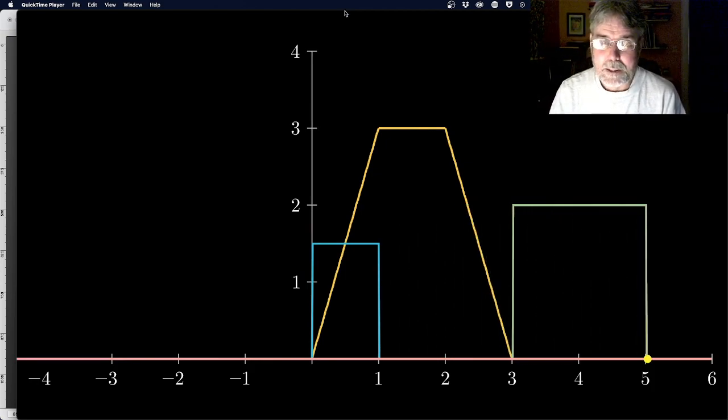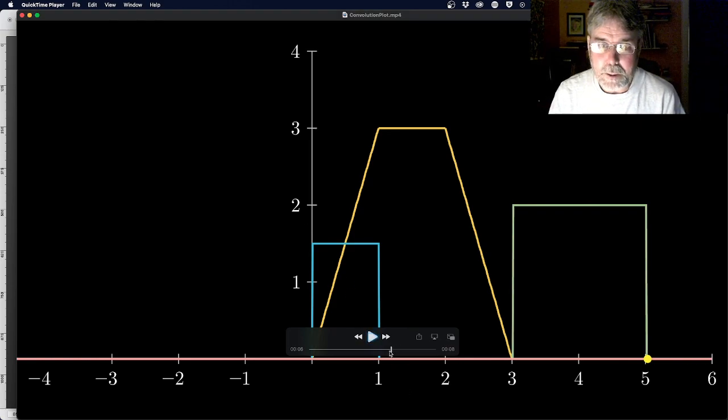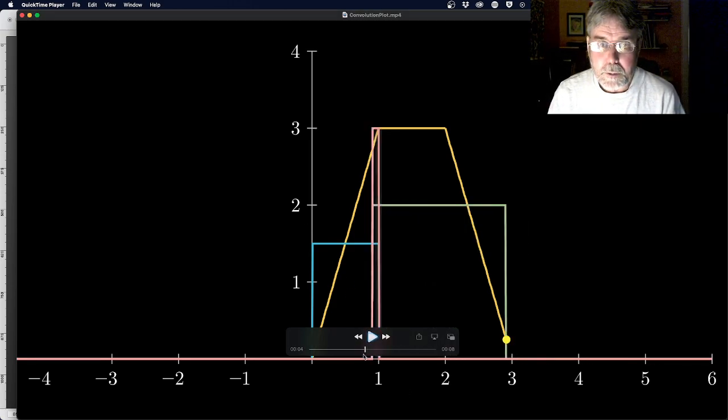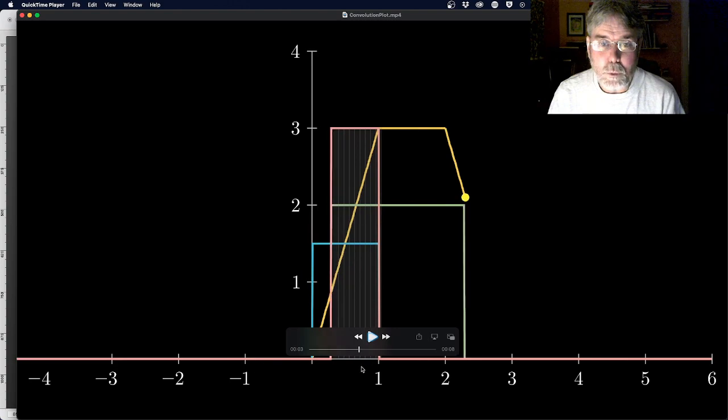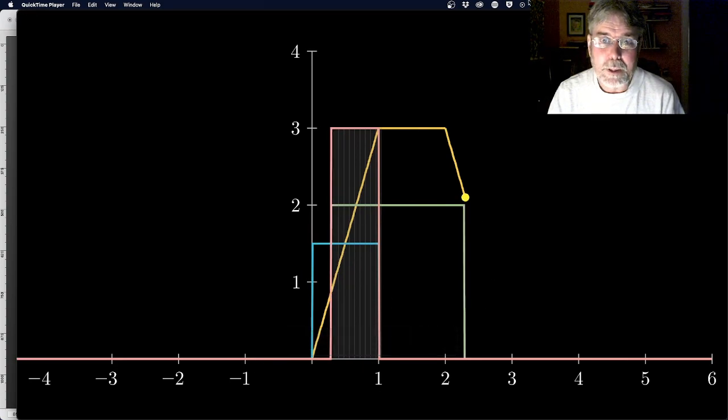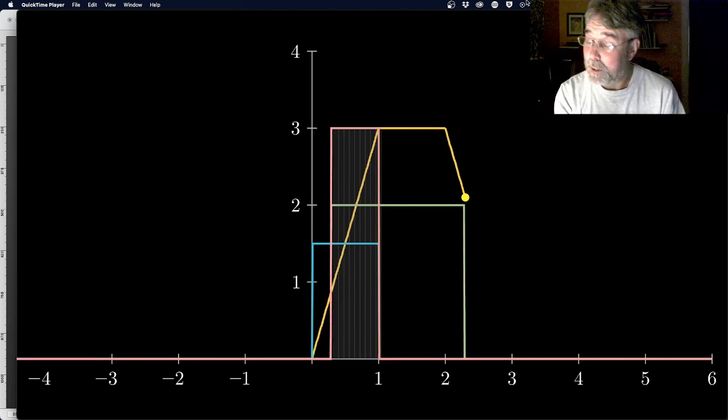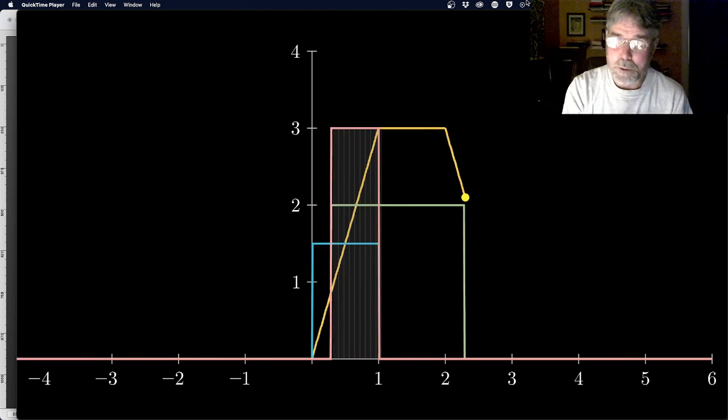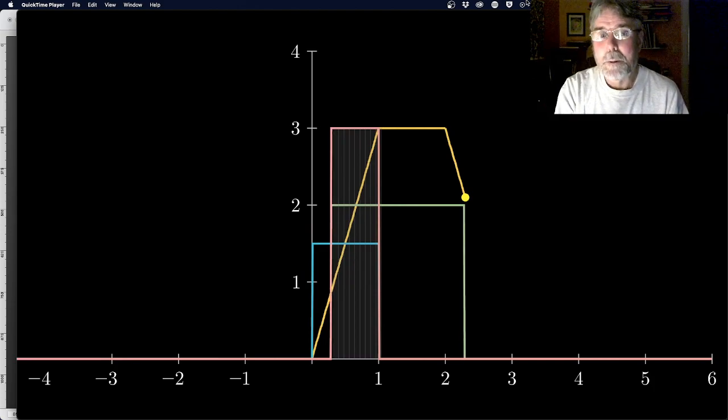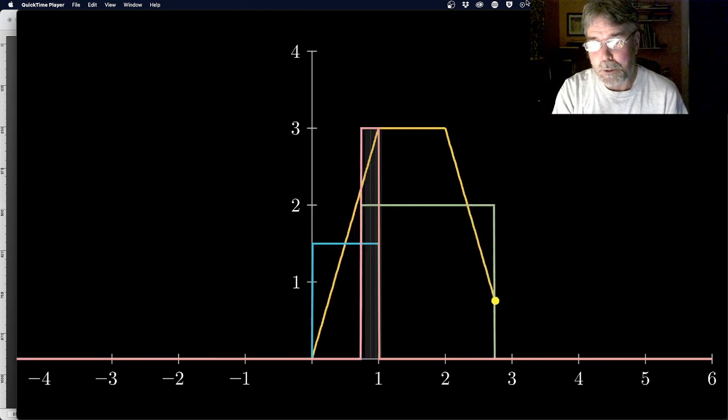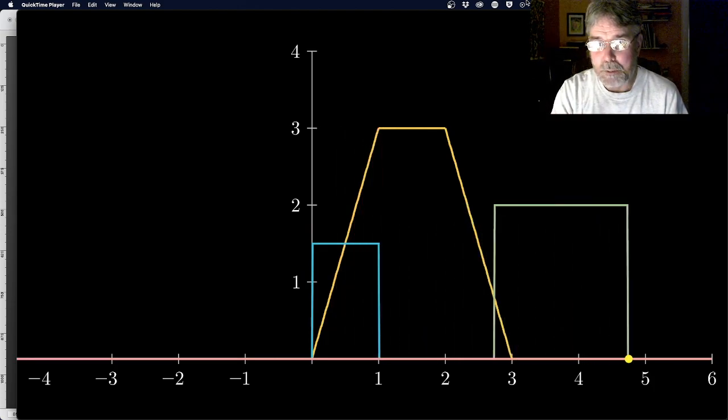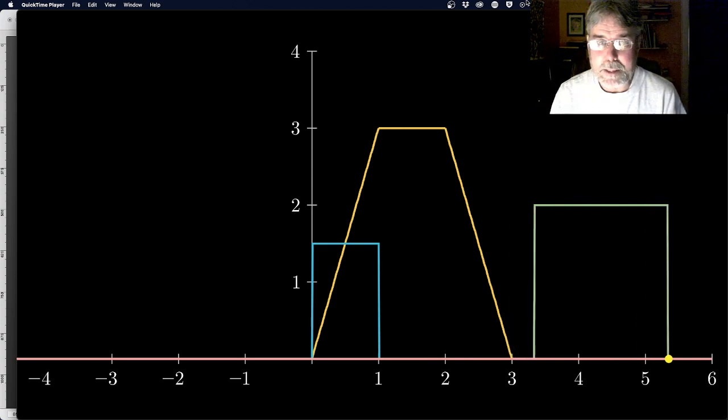So I hope that makes sense. Notice, it's only when there's an overlap between the impulse response sliding, the inverted or flipped impulse response sliding across the input. As long as there's overlap, there's an output. But eventually, the overlap goes to zero, and we get nothing. So that's the signal.